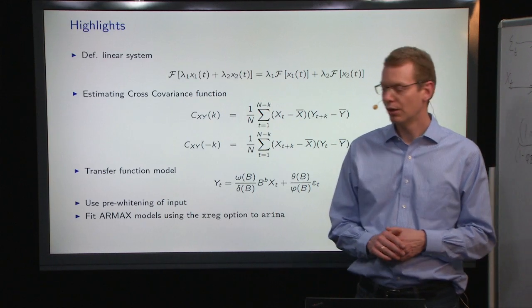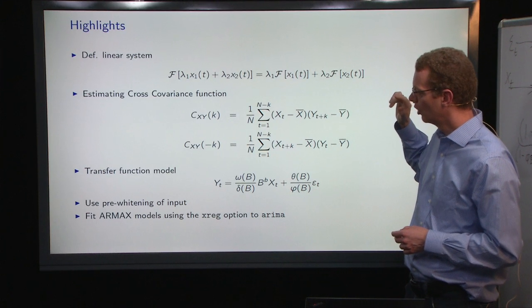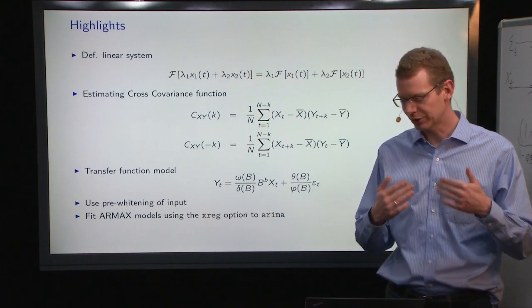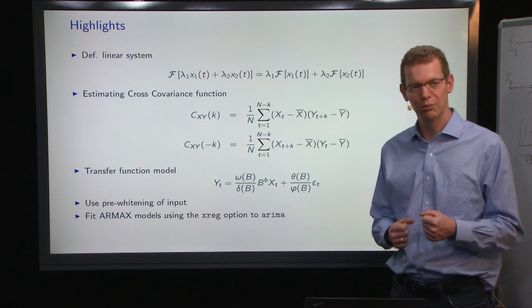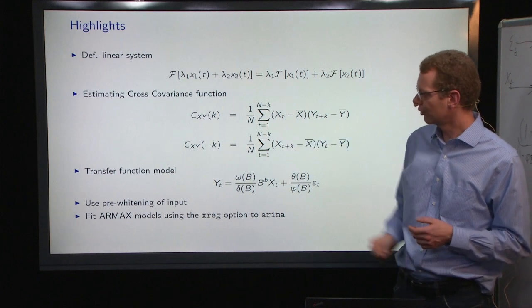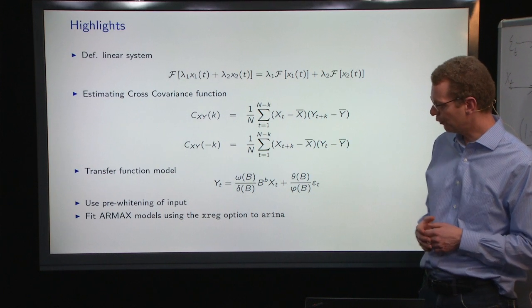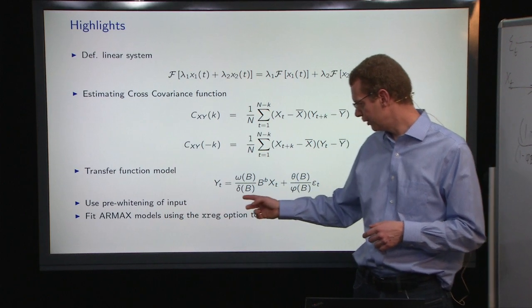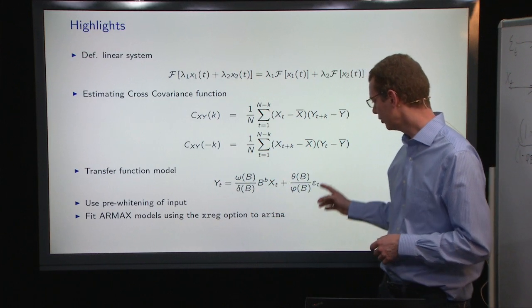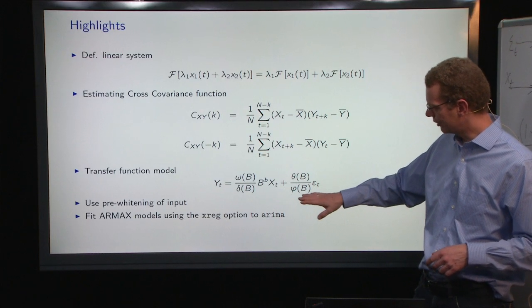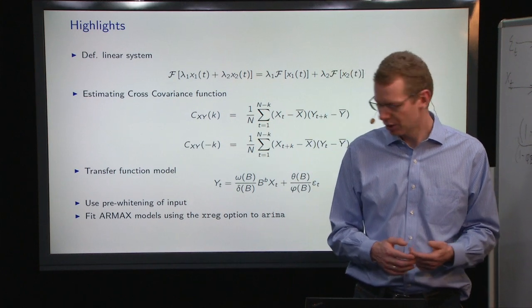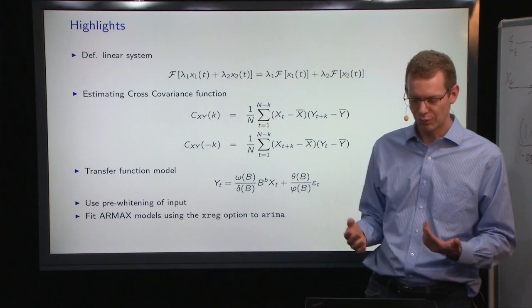So, to sum up, we started out looking at what is a linear system. We spent quite some time on the cross covariance and correlation function, which is kind of the background for starting to do pre-whitening and looking, essentially, what we do more of in the following is to look at multivariate system. There, we also have to look at the cross covariance function here. We look at the transfer function model where we used pre-whitening of the input here in order to estimate the model structure that we have in here, and also in order to be able to filter out and get the noise signal here so we can estimate that.